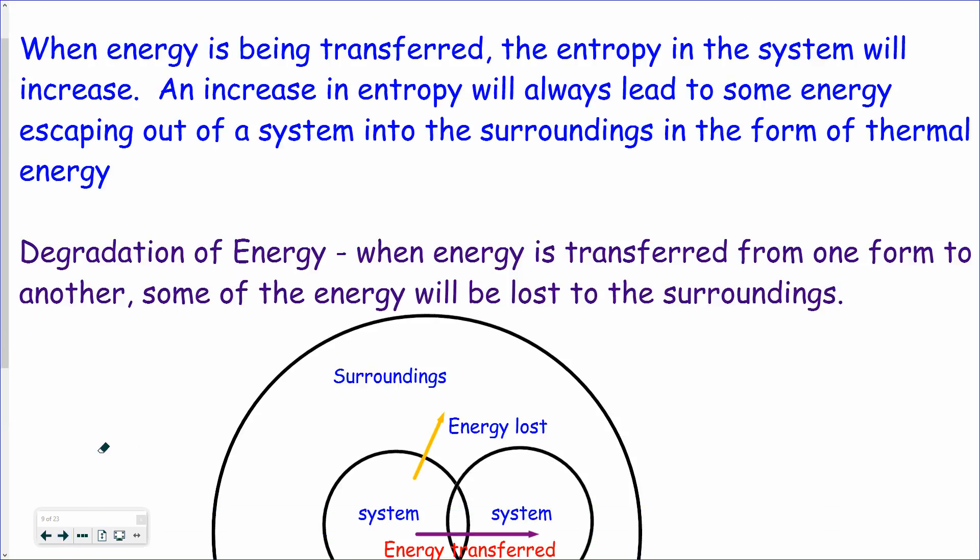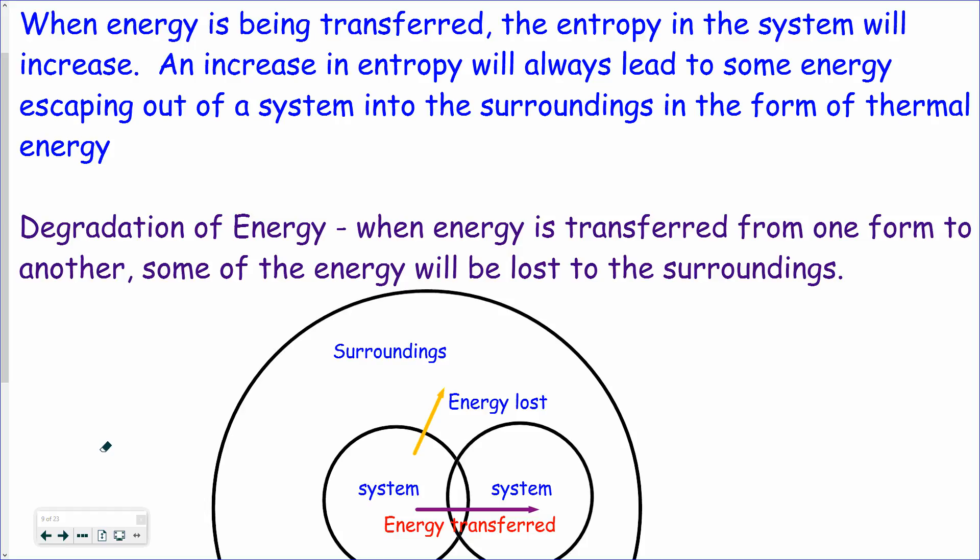So this concept is called the degradation of energy. And it's defined as when energy is transferred from one form to another, some of the energy will have to be lost to the surroundings because the energy will go to the most entropic state possible. So here's me. Let's pretend this system is the coal furnace. This system is the turbine. I'm transferring energy from the furnace to the turbine, but there's a lot of energy lost to the surroundings.